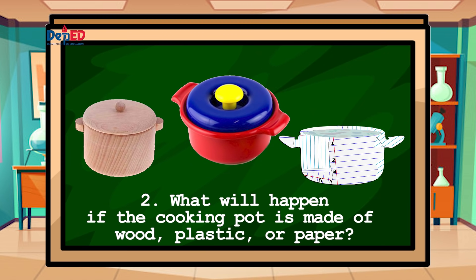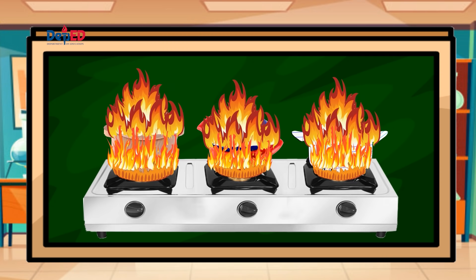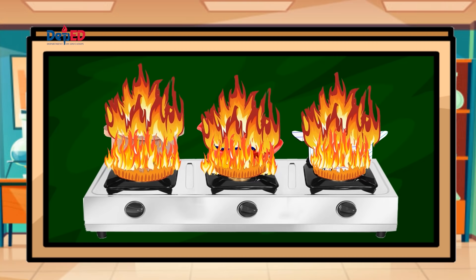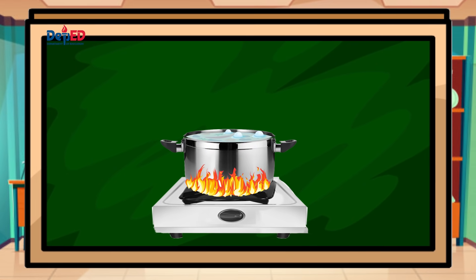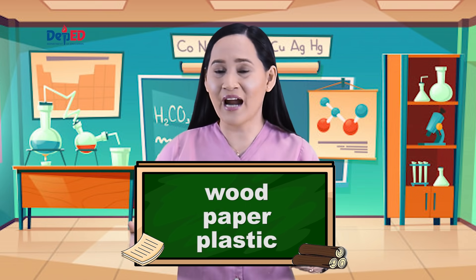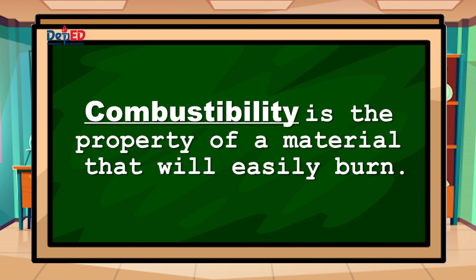For question number two: What will happen if the cooking pot is made of wood, plastic, or paper? If the cooking pot is made of wood, plastic, or paper, it will burn because the cooking pot is placed over fire. Cooking pots made of metal do not easily burn — they can withstand the heat. Wood, paper, and plastic are examples of materials that easily burn. The property of materials that determines whether or not they will easily burn is called combustibility.